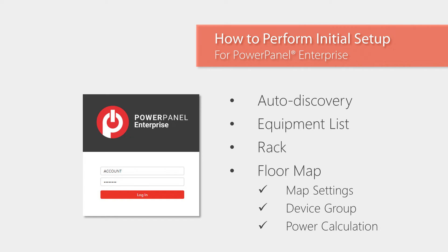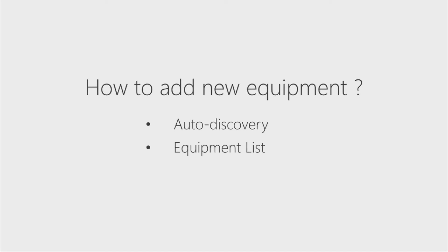Through the initial setup, you will be able to add new equipment and racks to the system, and manage your floor map to show the status and real-time information of all equipment. There are two ways to add new equipment to the system: one is through auto discovery, and the other is through equipment list.